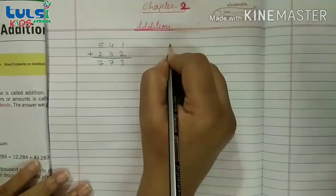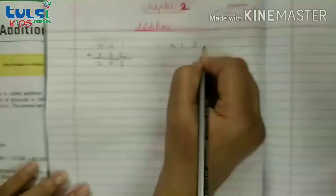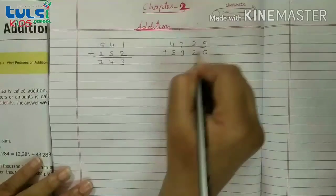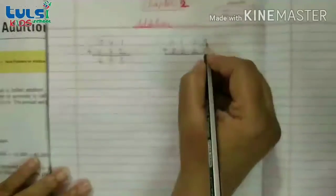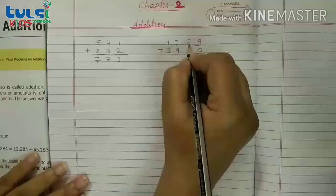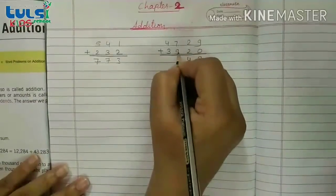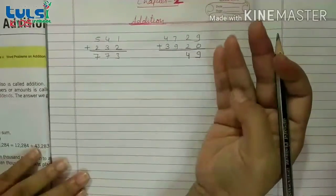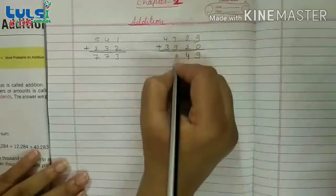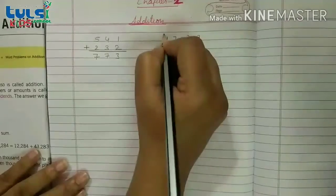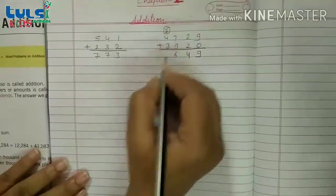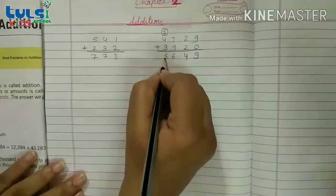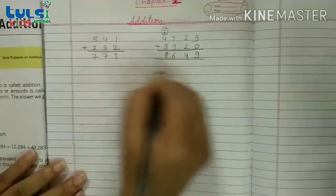Ab agar hum log 4 digit ke saath chalata hai, then 4729 plus 3920. Agar zero digit dhiya hoa hai, then 9 plus 0 is 9, 2 plus 2 is 4, 7 plus 9 is 16. So we will put 6 here and 1 is as a carry. So 4 plus 1 is 5, total 8. So this way we can do addition, okay?